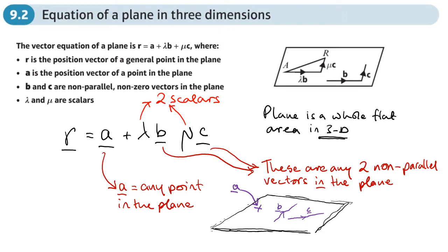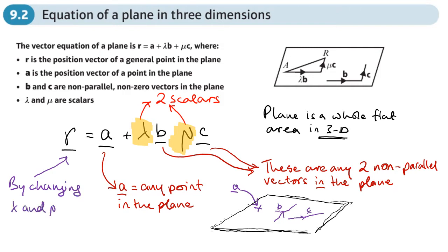Using those three things, we can pin down one particular plane. Once you've got a point in the plane and any two non-parallel vectors in the plane, there's only one plane it can be. And just like before, by playing around with the values of the two scalars — lambda and mu — we can generate points in the plane, which are R. By changing lambda and mu, we generate points in the plane.